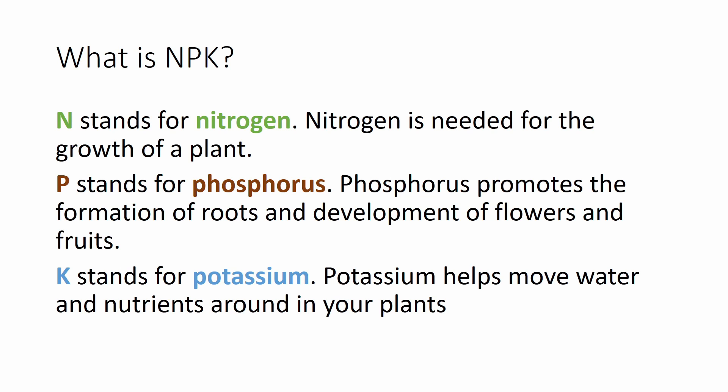P stands for phosphorus. It promotes the formation of roots and development of flowers and fruits. And K stands for potassium, which helps move water and nutrients around your plants. Potassium is responsible for the overall health and nutrition of your plant.